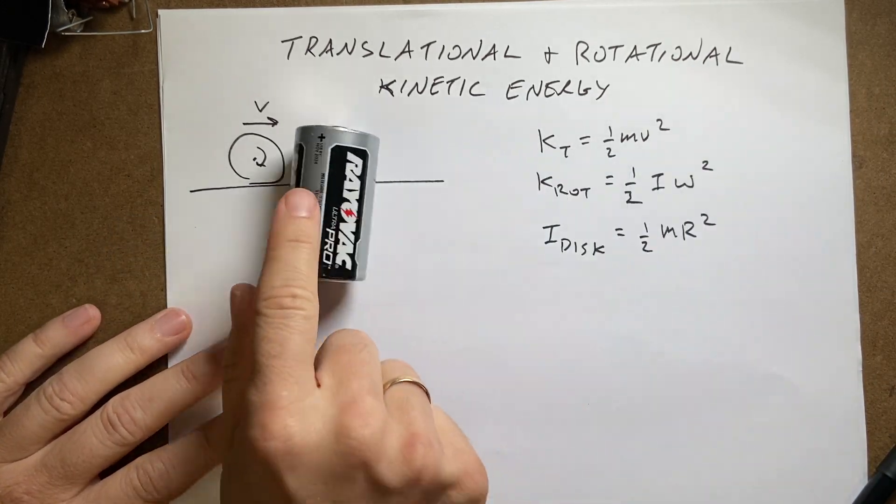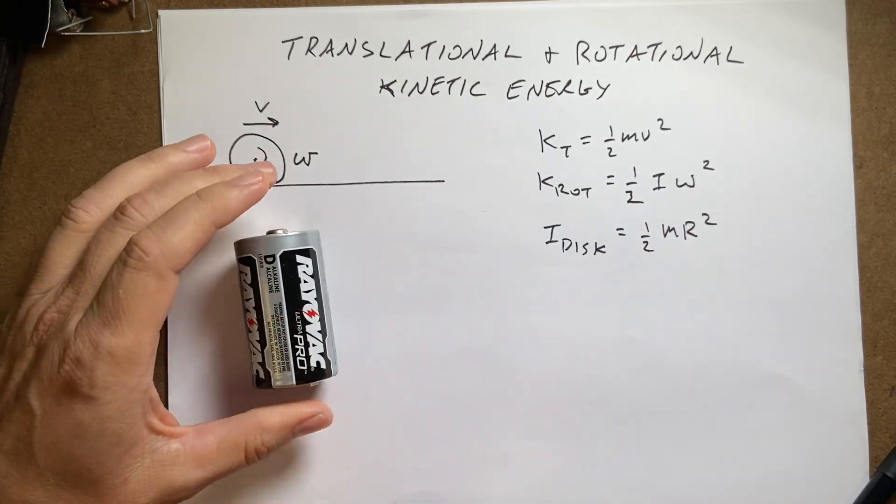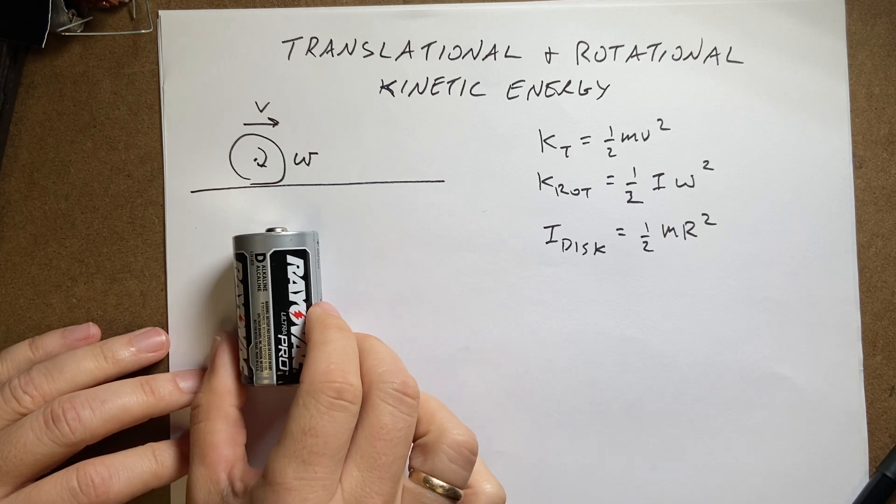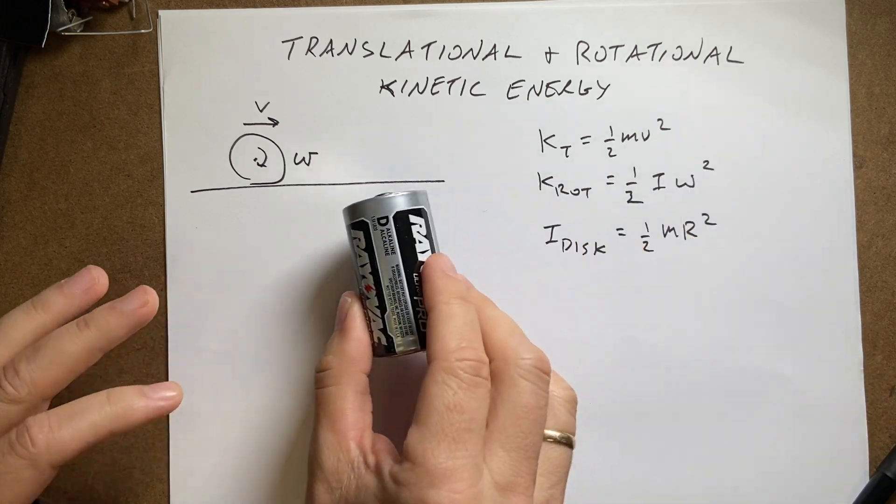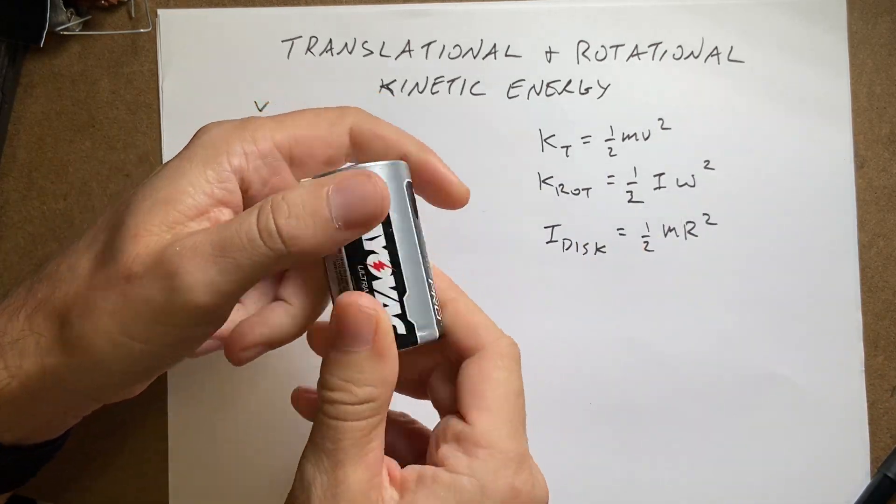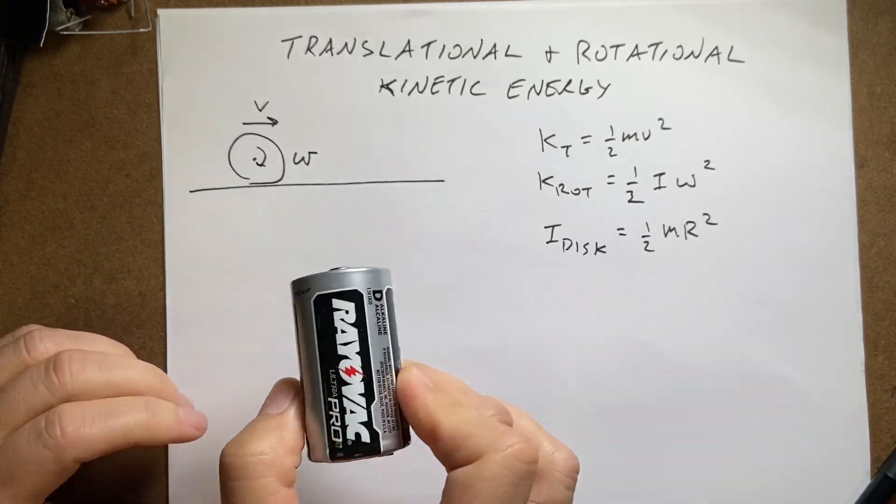Without slipping, that's an important thing. So what's the ratio? It has two types of energy in this case, two types of kinetic energy. It has translational kinetic energy because its center of mass is moving, and then it has rotational kinetic energy because it's also spinning. So what's the ratio of translational to rotational kinetic energy?